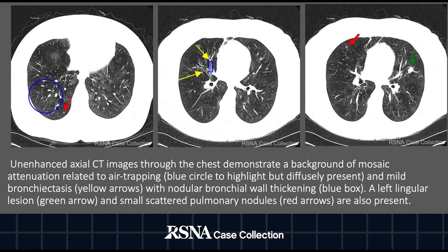Here we have unenhanced axial CT images through the chest, which demonstrate a background of mosaic attenuation related to air trapping, demarcated by the blue circle here. Additionally, there is mild bronchiectasis with nodular bronchial wall thickening, highlighted by the blue box here. A left lingular lesion, demarcated by the green arrow, is also demonstrated with a background of small scattered pulmonary nodules, demarcated by the red arrow.